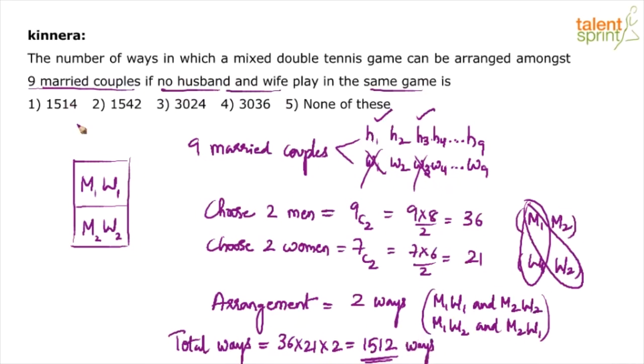1512 ways. 1512 ways is not given up. 1514, he says. Is the calculation correct? 36 multiplied by 42. 1440 plus 72. 1512. Yeah. Option 5. None of these. Okay.